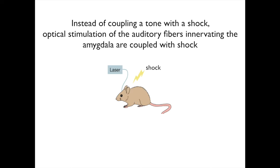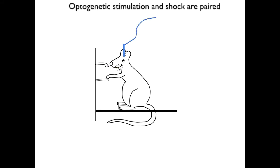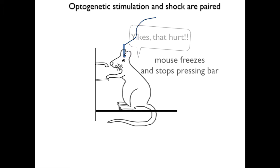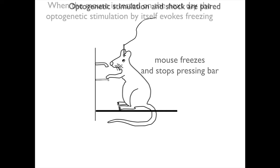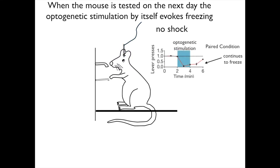Instead of coupling a tone with a shock, optical stimulation of the auditory fibers innervating the amygdala are coupled with shock. The mouse is pressing a bar for a liquid reward, the optogenetic stimulation and shock are paired, the mouse freezes and stops pressing the bar. When the mouse is tested the next day, the optogenetic stimulation by itself evokes freezing, plotted as the paired condition for optogenetic stimulation.